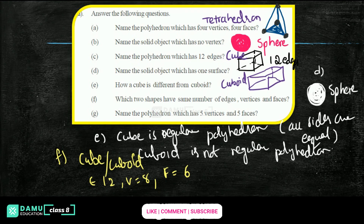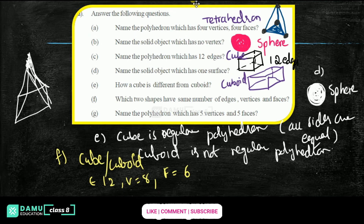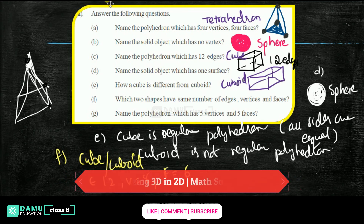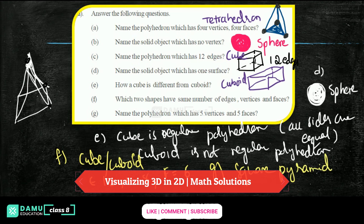Then: name the polyhedron which has 5 vertices and 5 faces. So let's draw a square pyramid. A square pyramid will have — how many vertices? One, two, three, four, five. That is the answer: for G, square pyramid has 5 faces and 5 vertices. Thanks for watching, please subscribe.